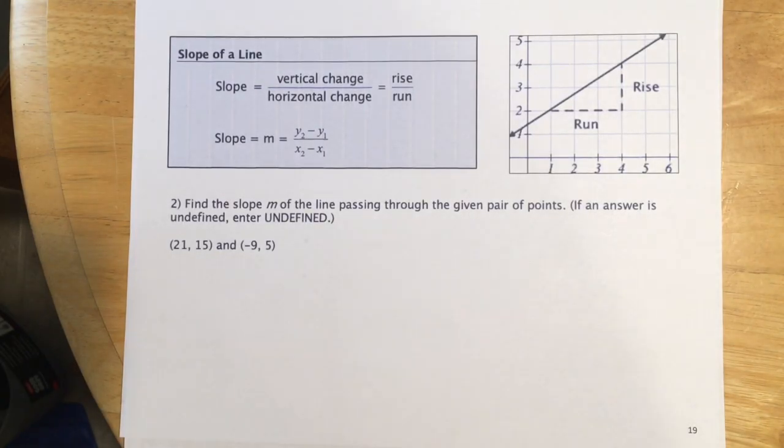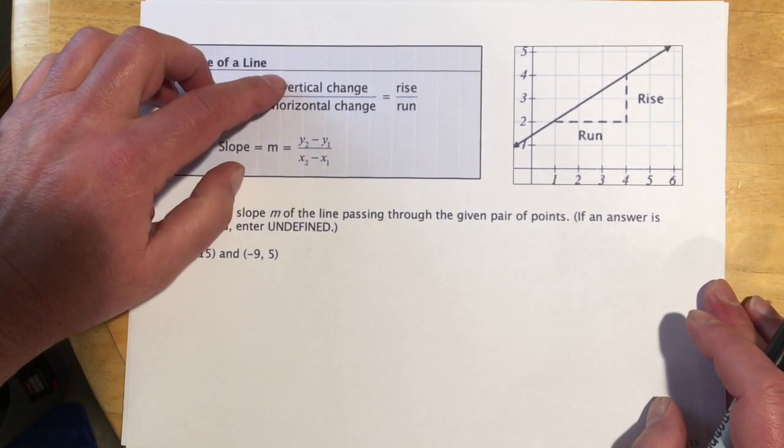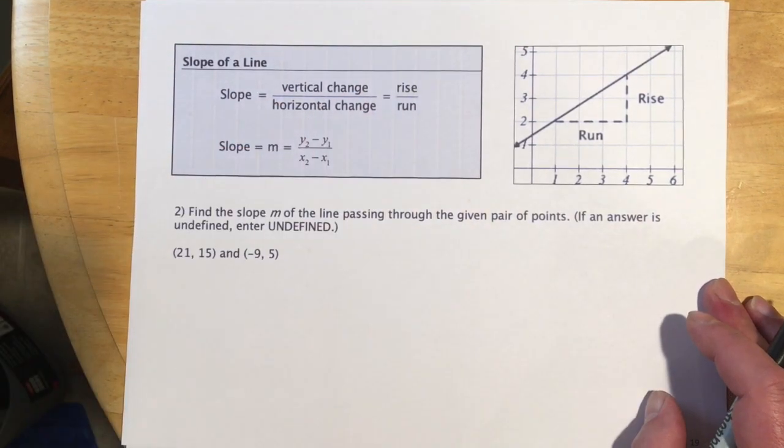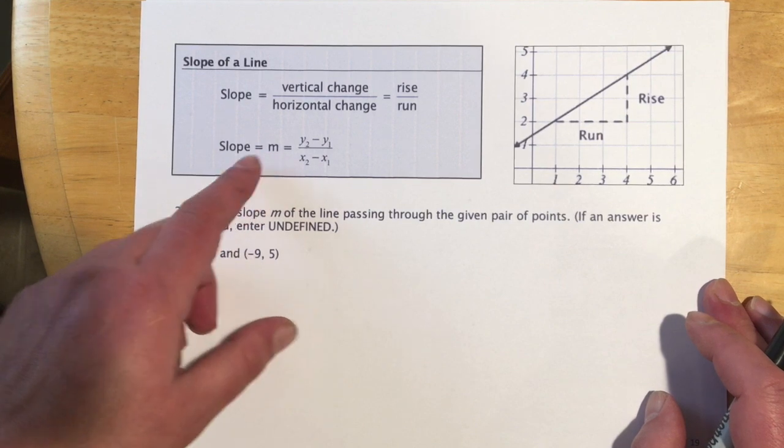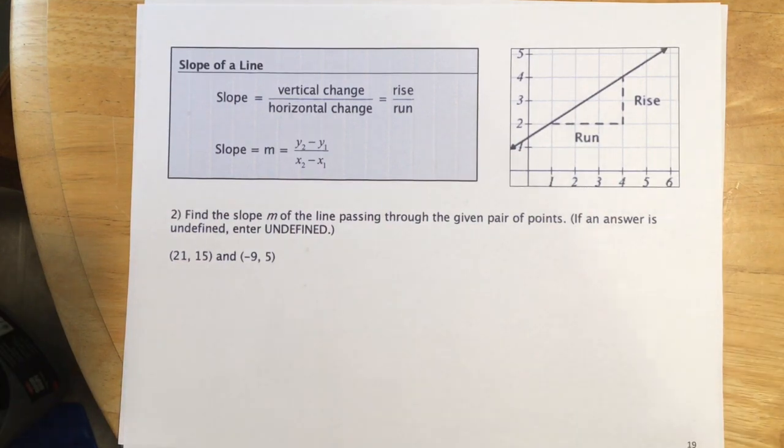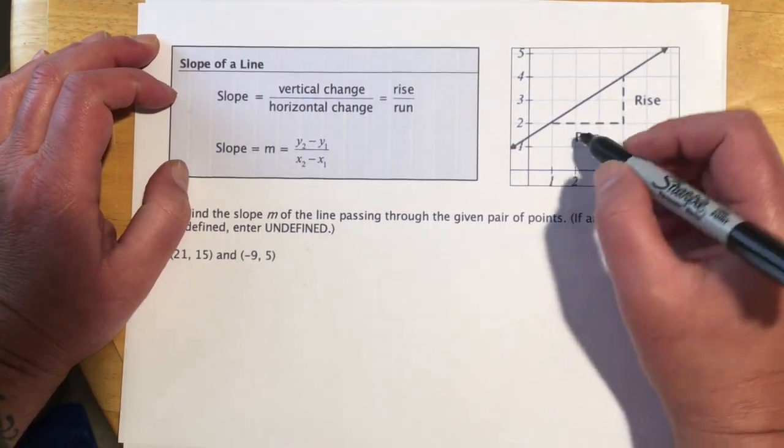Okay, slope of a line. And hopefully you're remembering a little bit of this from either math 98 or 94. Slope is our vertical change over our horizontal change, or also known as rise over run. And then we have this other definition. Remember, slope is m. And it's y2 minus y1, x2 minus x1, when we're given two points.